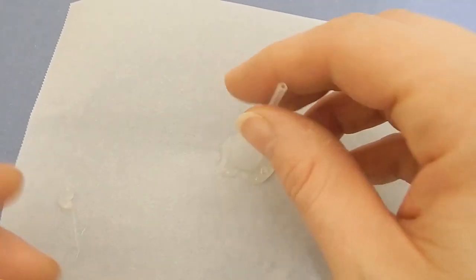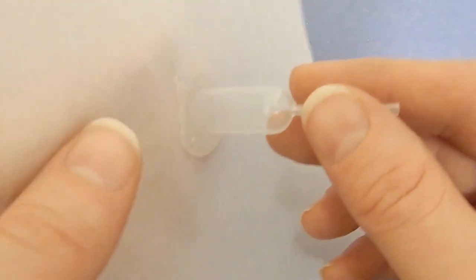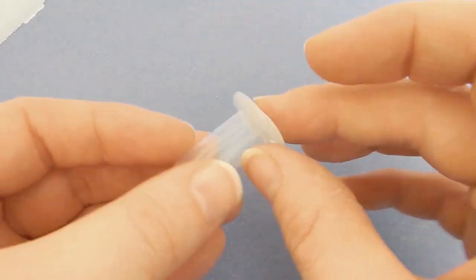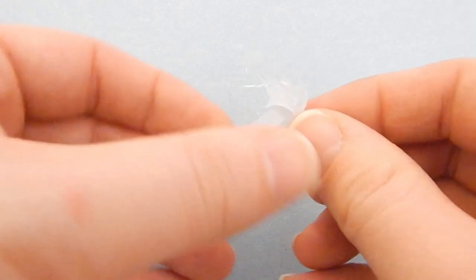It'll peel right off the paper. Now I'm just going to peel the glue right off the plastic.